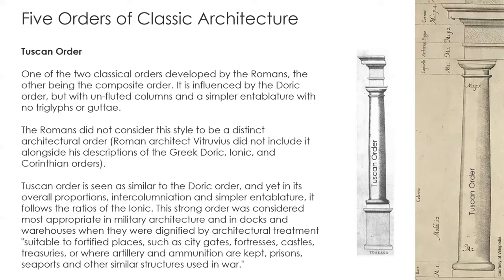The Tuscan order is seen as similar to the Doric order, yet its overall proportions, intercolumniation, and simpler entablature follow the ratio of the Ionic. So although it looks like a Doric, it actually follows the ratio of the Ionic. This strong order was considered most appropriate in military architecture and in docks and warehouses — dignified by architectural treatment suitable for fortified places such as city gates, fortresses, castles, treasuries, prisons, seaports, and similar structures used in war. It is a sign of power, stability, and the state. You will see it in many places around Europe as well as in Washington D.C.